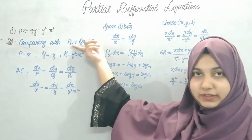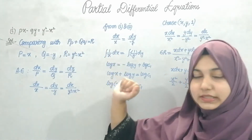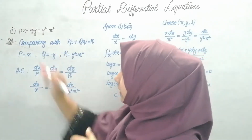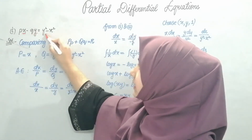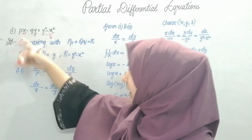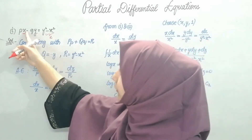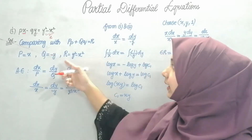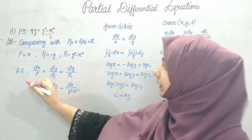Now let's try to solve this. If we compare with the standard form of Lagrange's equation — capital P times small p plus capital Q times small q equals R — then capital P's value is x, the coefficient of small p is x, the coefficient of Q is minus y, and R is y squared minus x squared.